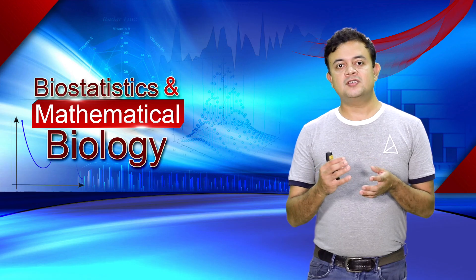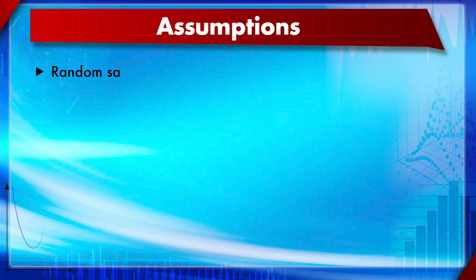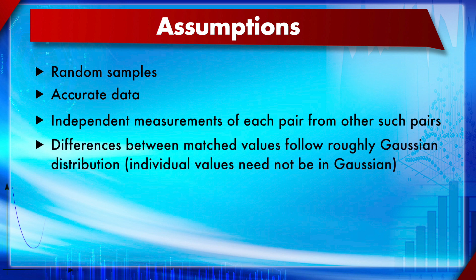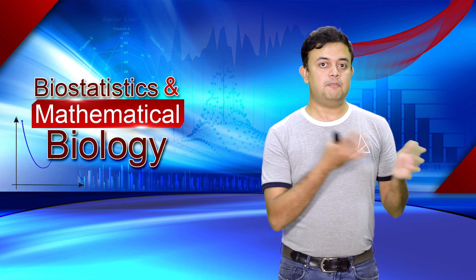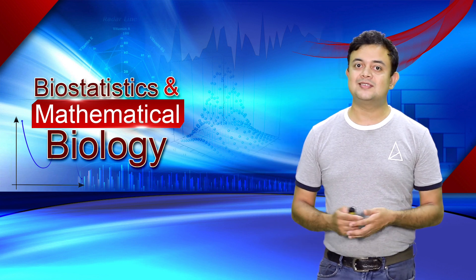The assumptions are almost the same as the regular t-test: random sample, accurate data, and independent measurements. However, the differences between the matched values must be roughly Gaussian — the values themselves need not be Gaussian, but the differences between matched pairs should. Notably, there is no assumption of homoscedasticity, which is the main difference between the independent t-test and the paired t-test.